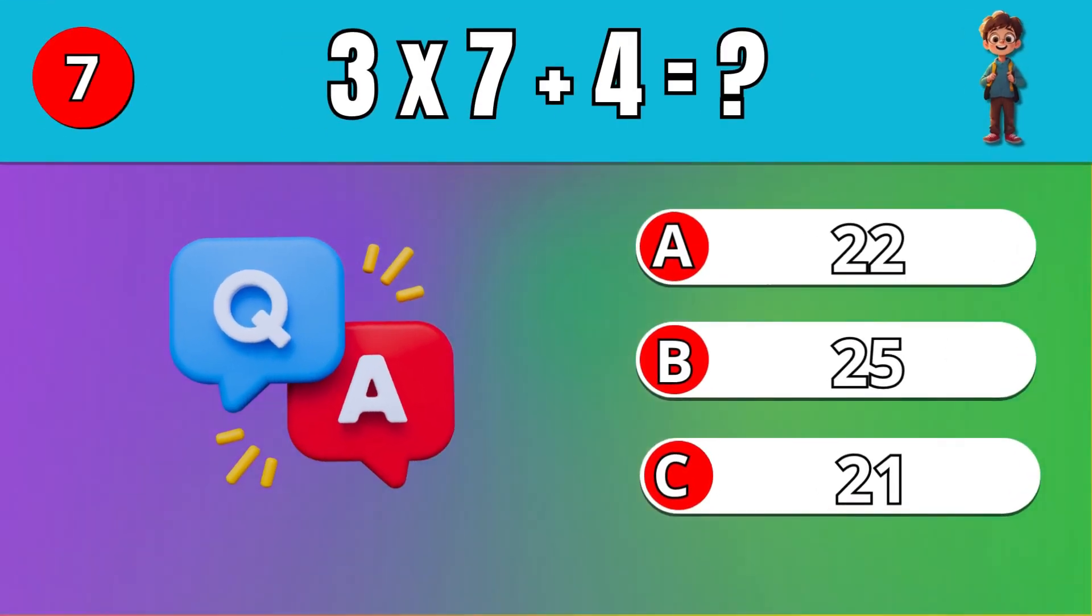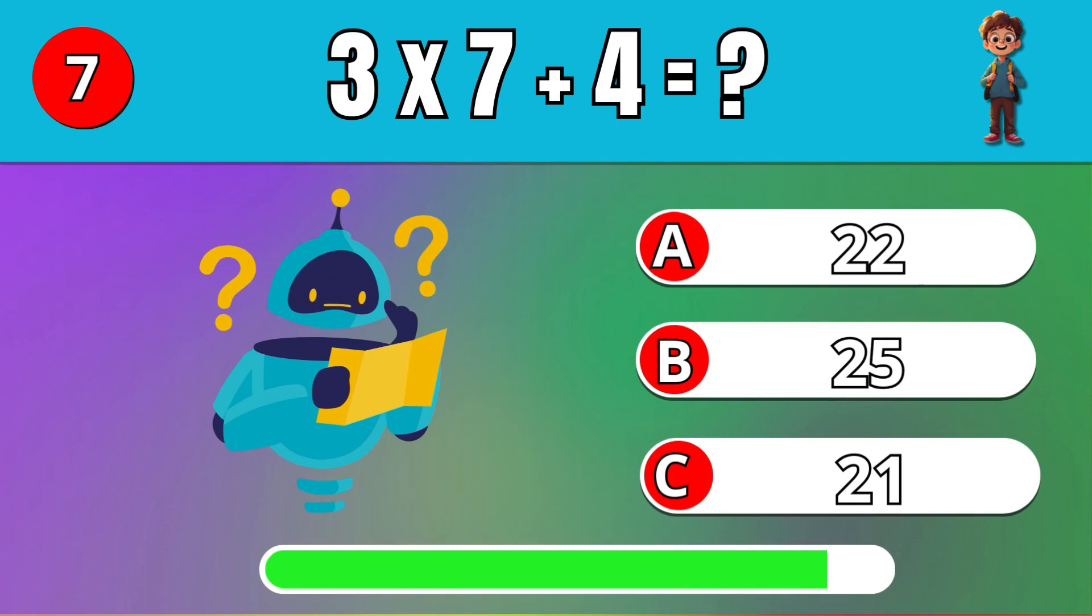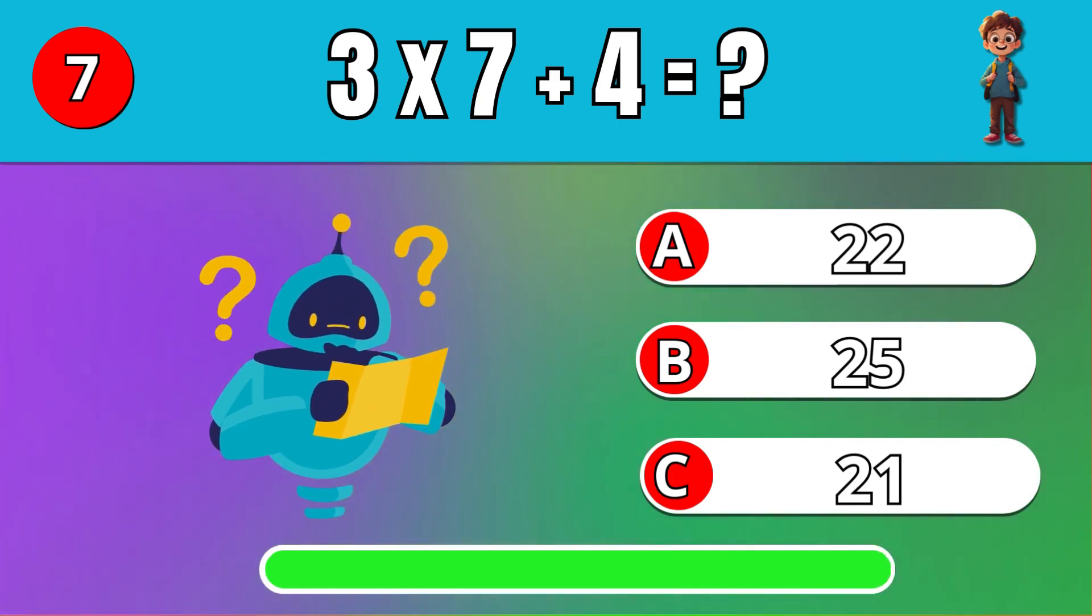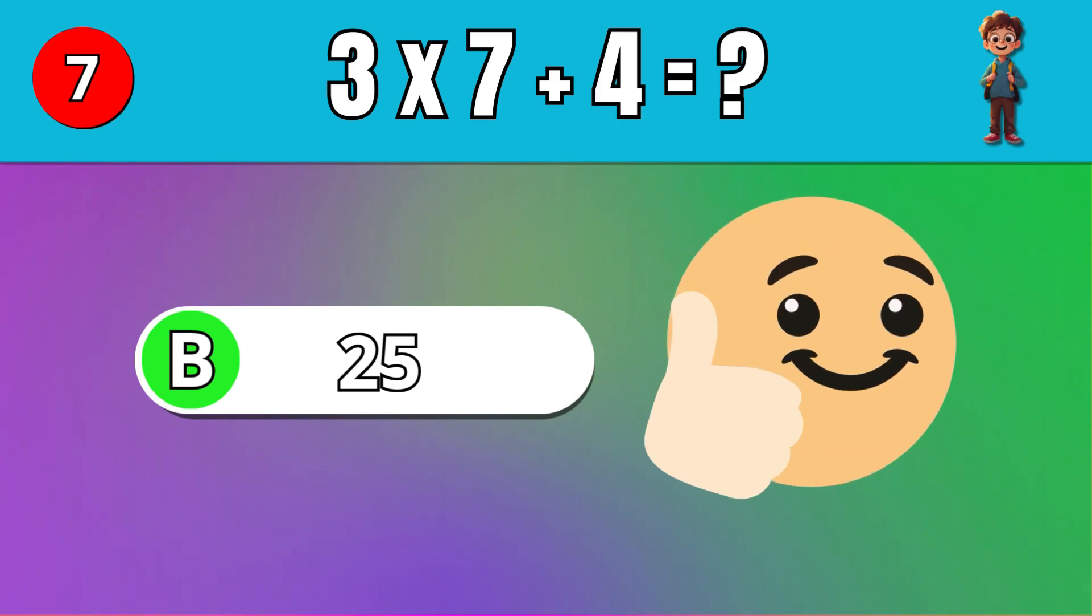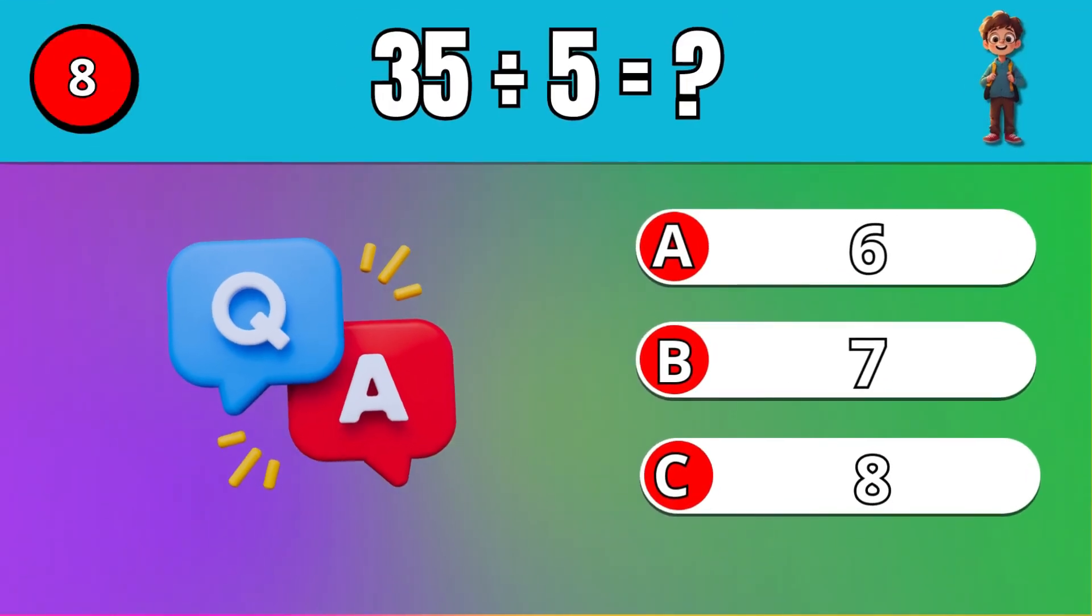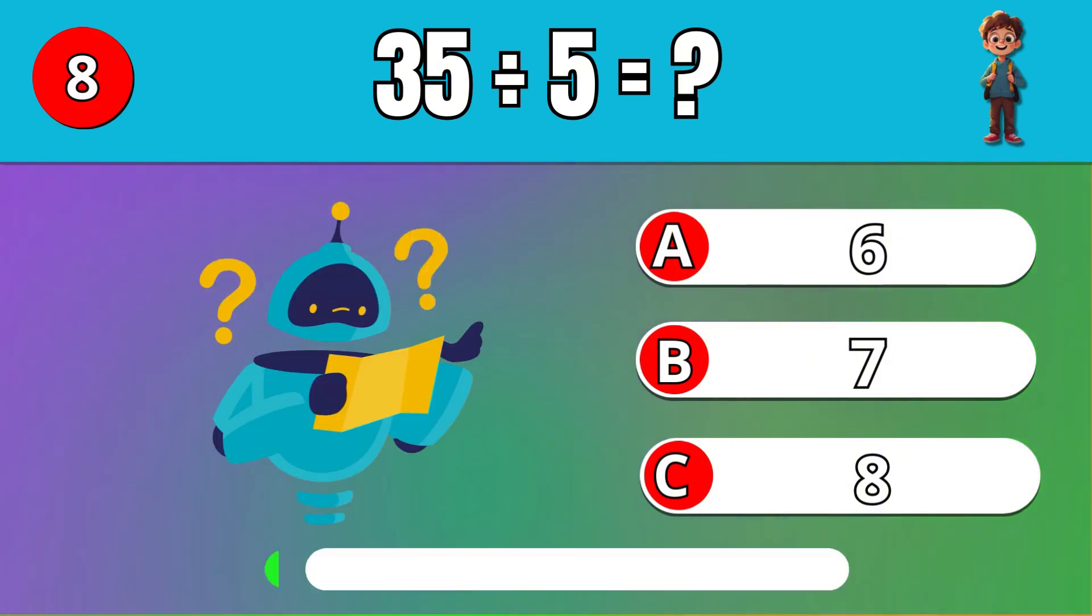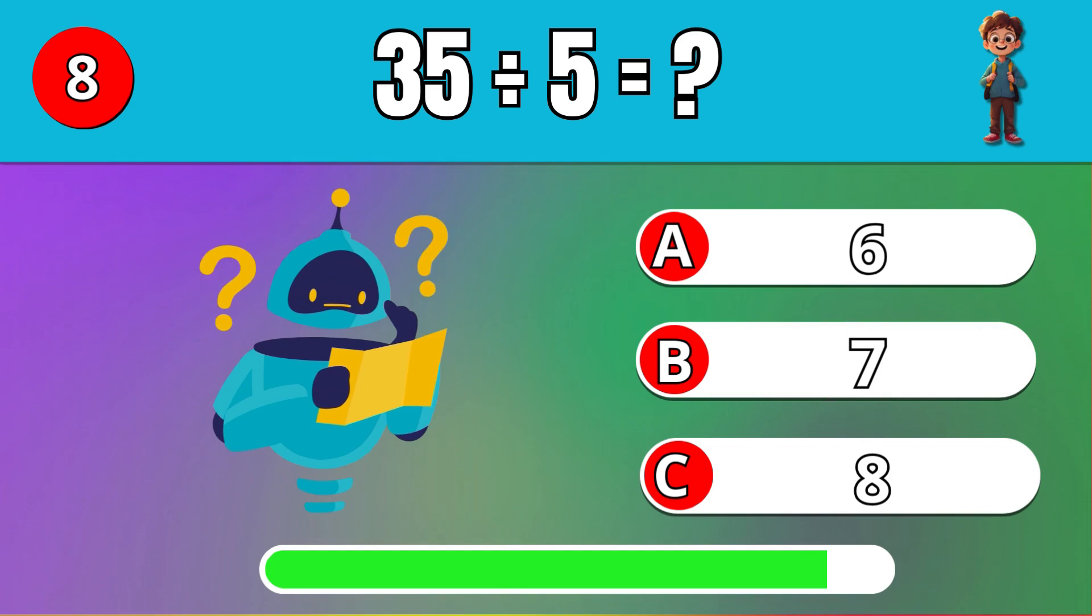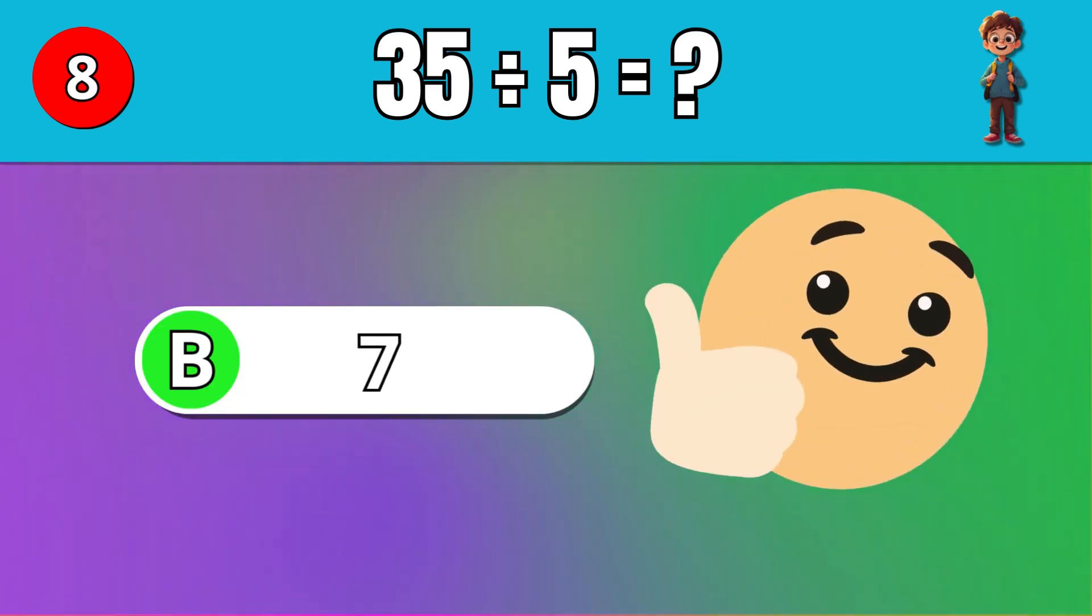What is 3 times 7 plus 4? B, 25. What is 35 divided by 5? B, 7.